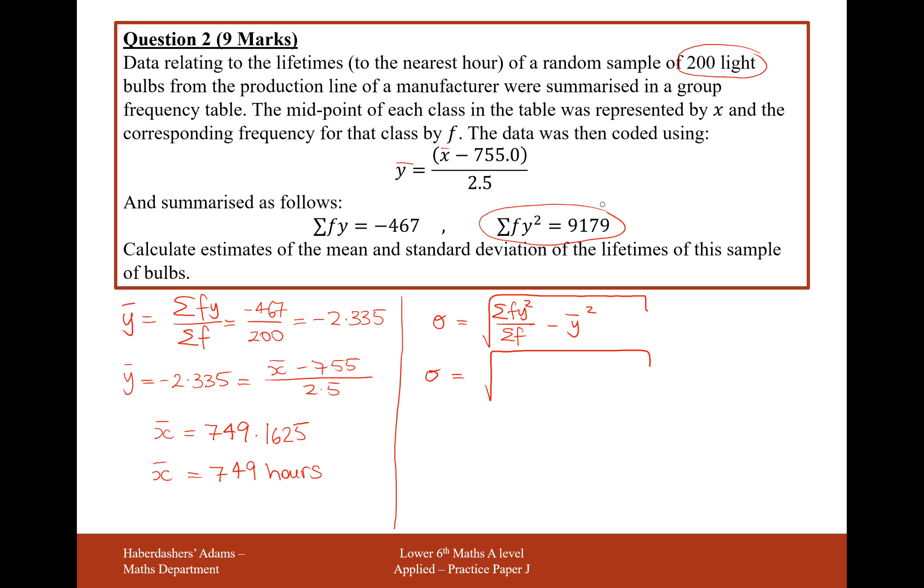So sigma equals the square root of, let's pick out the numbers from what we're given, 9179 over 200, and we'd use the answer button here because that should be in our calculator, minus the mean squared. We get the sigma for Y being 6.3594. So this is the standard deviation for Y.